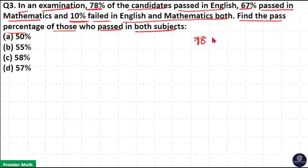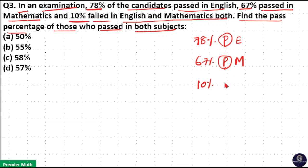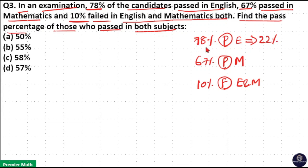78% of students passed in English, 67% passed in Maths, and 10% failed in both. We need to find the percentage of students who failed in English as well as in Maths. 78% passed in English means 22% (100 minus 78) failed in English. And 67% passed in Maths means 33% (100 minus 67) failed in Maths.